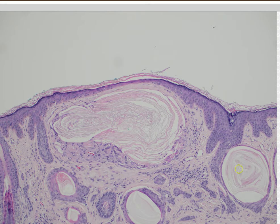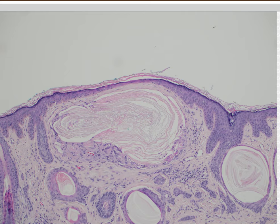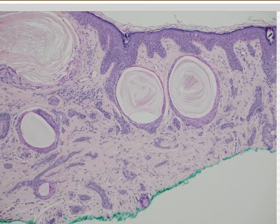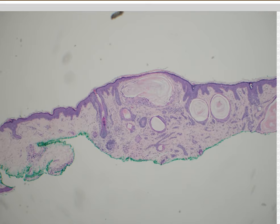Here we have these keratin microcysts — they've ruptured and the keratin has come out and made a little keratin granuloma. That's a very common finding in anything that has keratin-filled cystic spaces, including trichoepitheliomas, microcystic adnexal carcinoma, and squamous cell carcinoma when keratin pearls spill out. Anytime you have rupture of these keratin cysts, it can produce granuloma and also calcifications. I feel like those are common but not discriminatory findings.